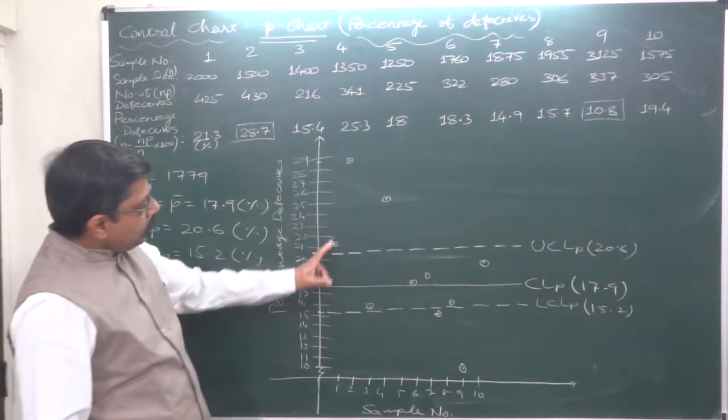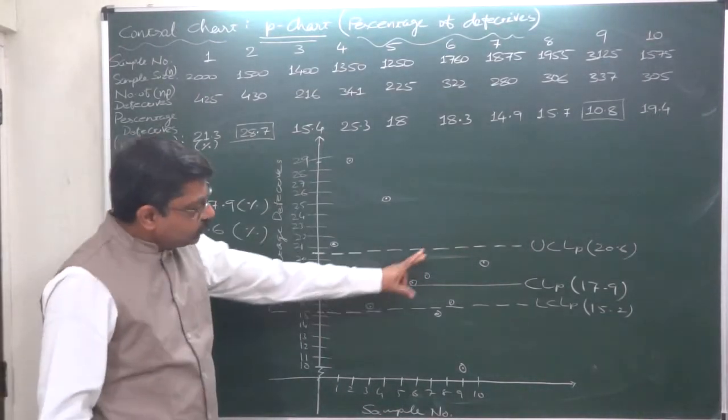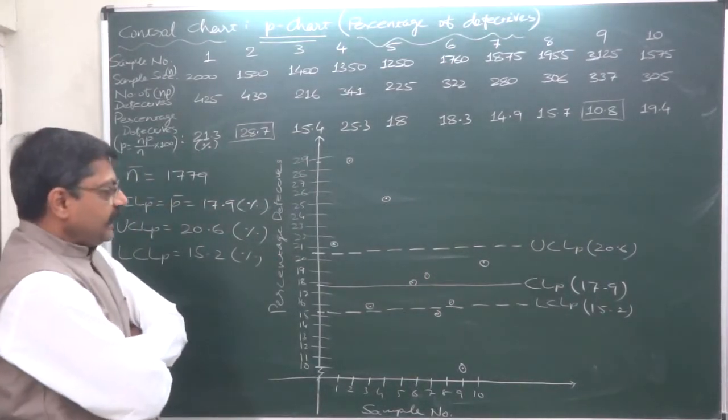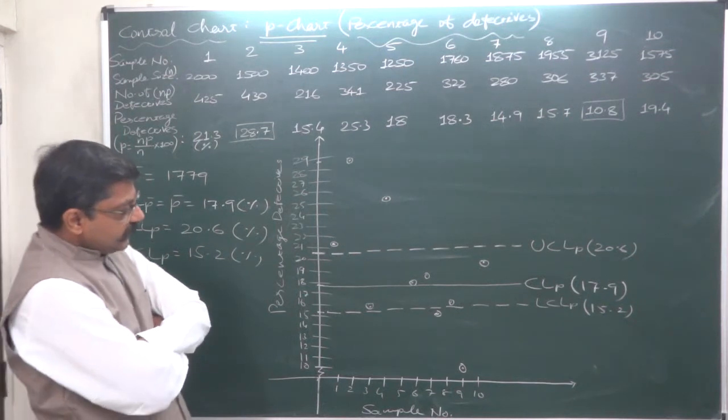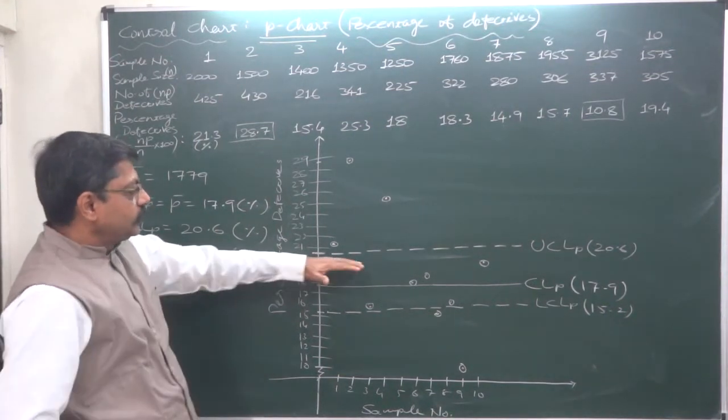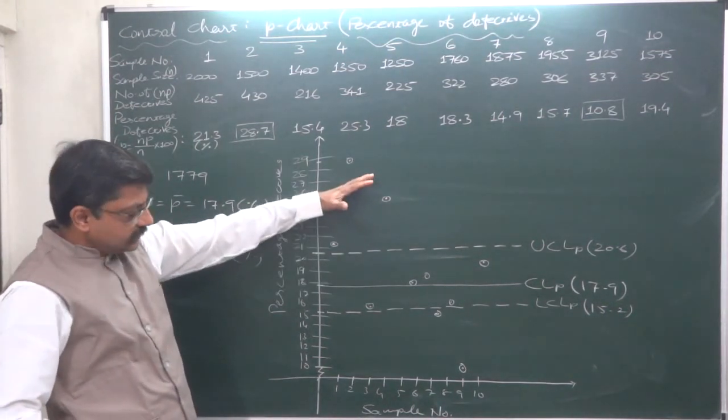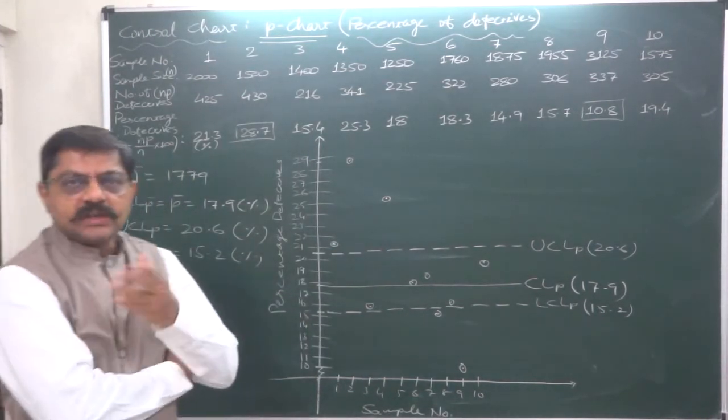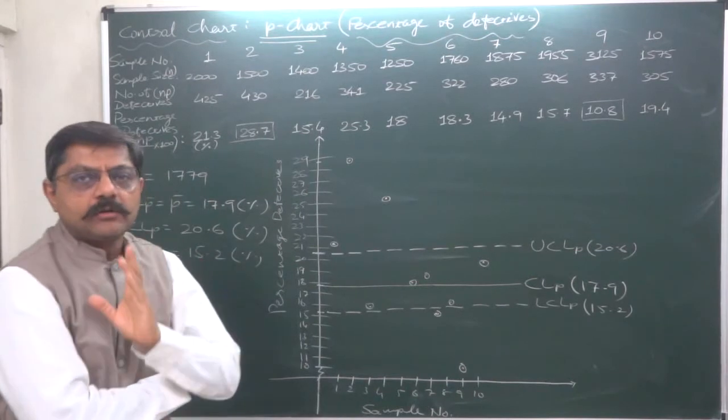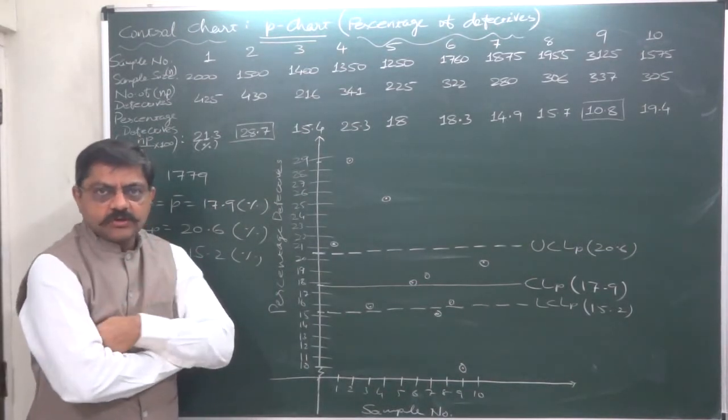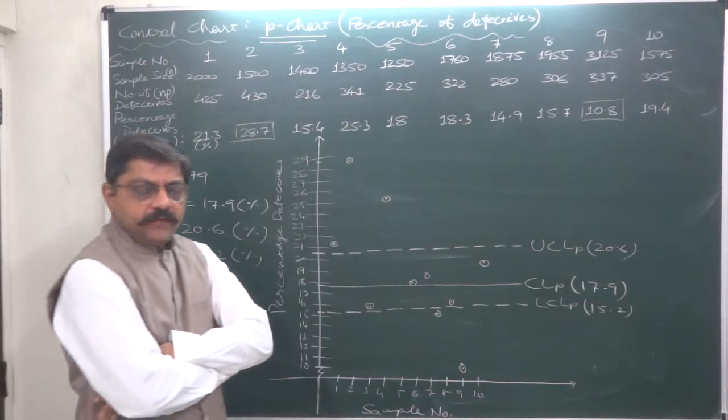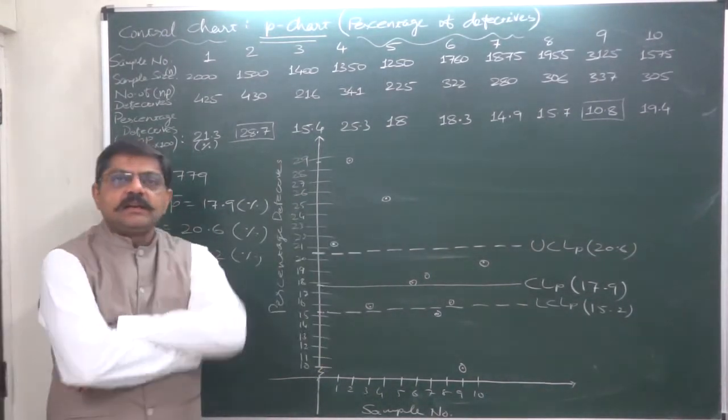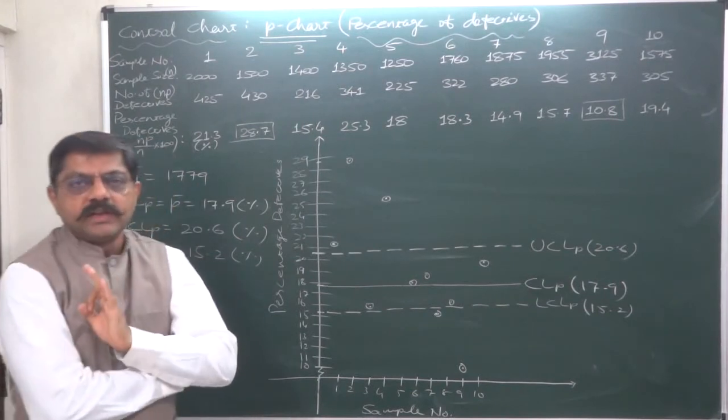If your teacher advises you to join all these with straight lines, do join. It is optional. The main thing is examine the graph. How many points are above the UCL? There are three points. And two points are below the LCL. Out of ten, five points are either above the UCL or below the LCL. That means the process is not under control.